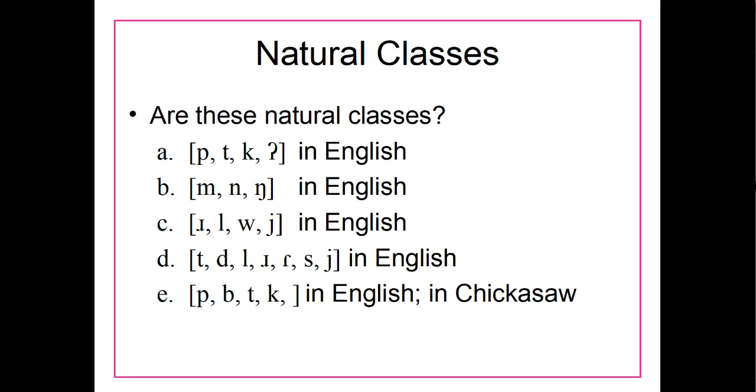Again, you may have had trouble describing this as a natural class in English, because it's hard to somehow come up with the terms to describe these, but to not include the other oral stops in English. We can't use place of articulation because bilabials, but then we have alveolar and velar, so place of articulation doesn't work. Voiced versus voiceless doesn't work because we have both a voiced bilabial stop and a voiceless bilabial stop. So, in English, these are not a natural class.